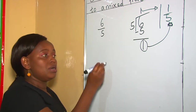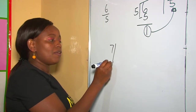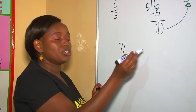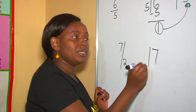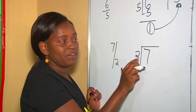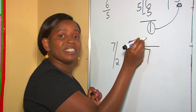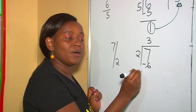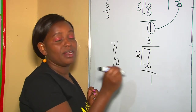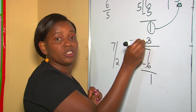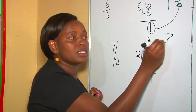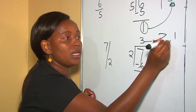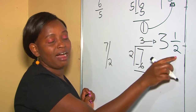Let's get another example: 7 out of 2. Using the division approach, numerator is 7, divided by denominator, which is 2. 7 divided by 2 goes 3 times because of 6. 3 times 2 is 6. 7 take away 6 is 1. Therefore, the number on top becomes our whole number, which is 3, and the remaining number takes up the fraction part, which is 1 out of 2. The answer is 3 and a half.